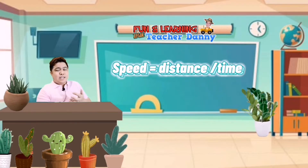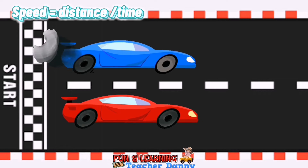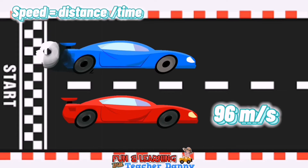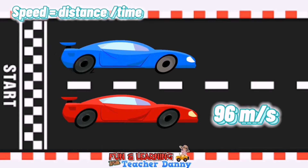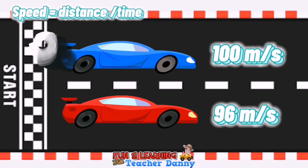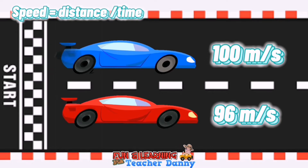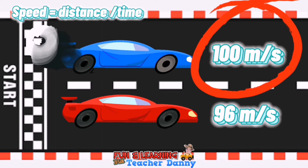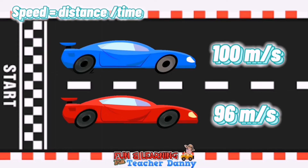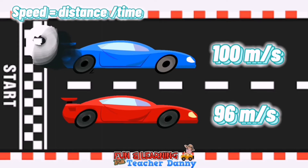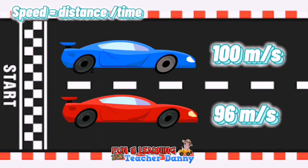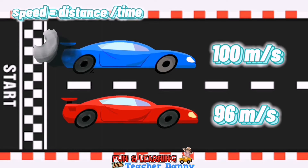How about these cars traveling the same distance? Which car is faster — is it the red car at 96 meters per second or the blue car at 100 meters per second? The blue car which travels 100 meters per second is faster, because 100 meters per second is greater than 96 meters per second, meaning the blue car runs faster than the red car.